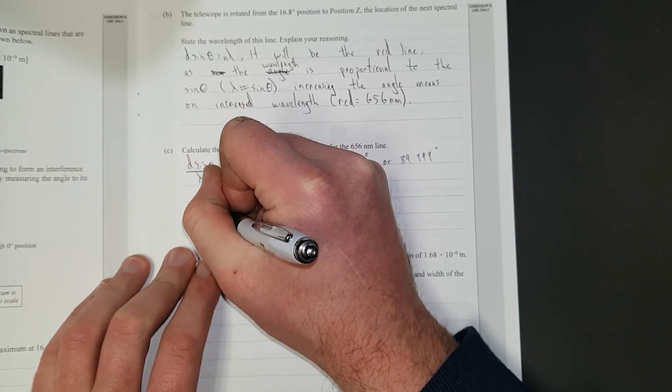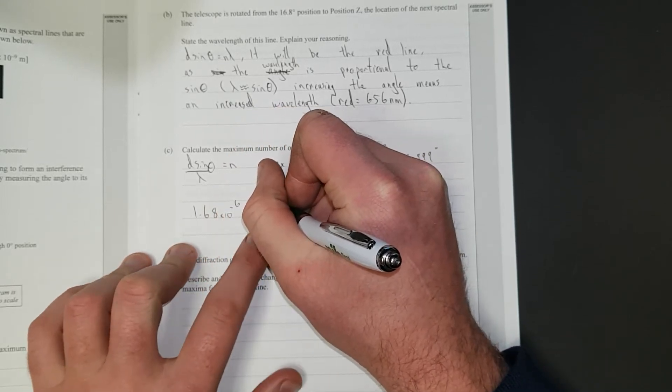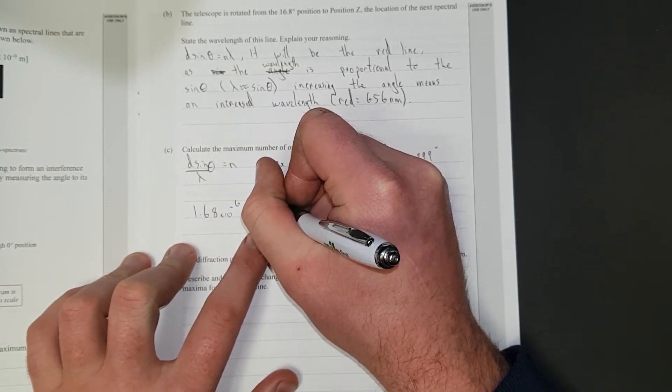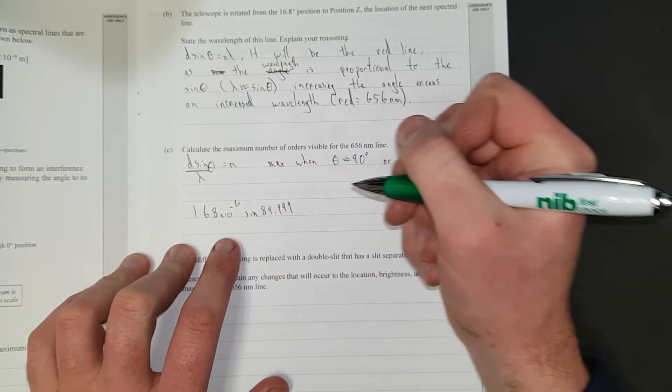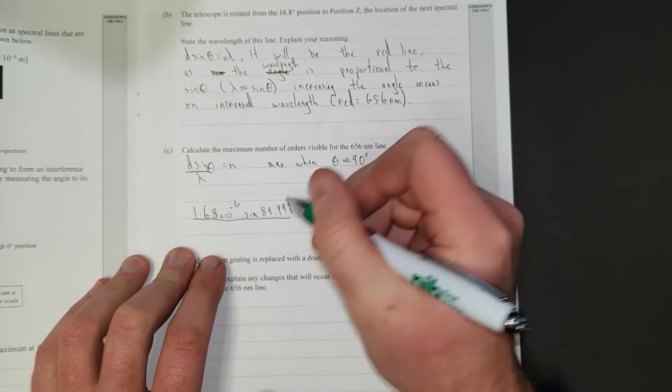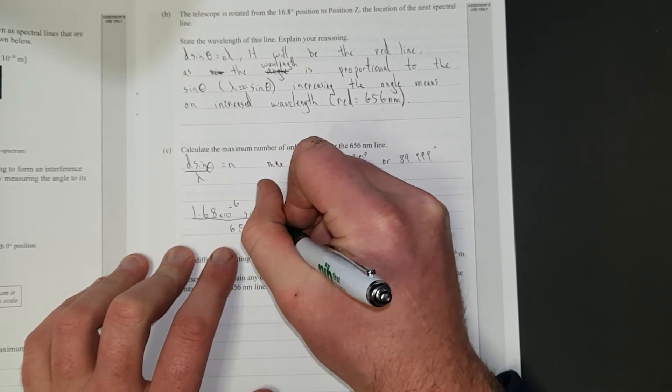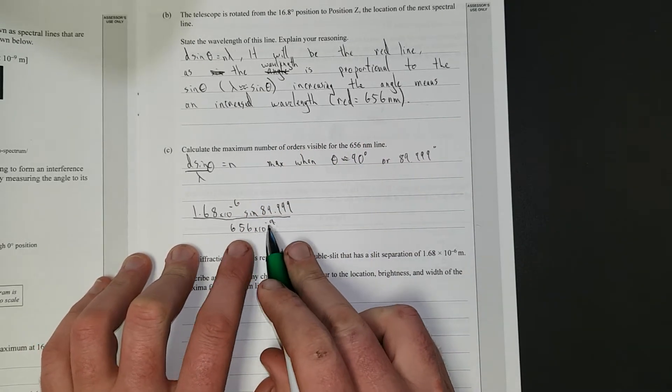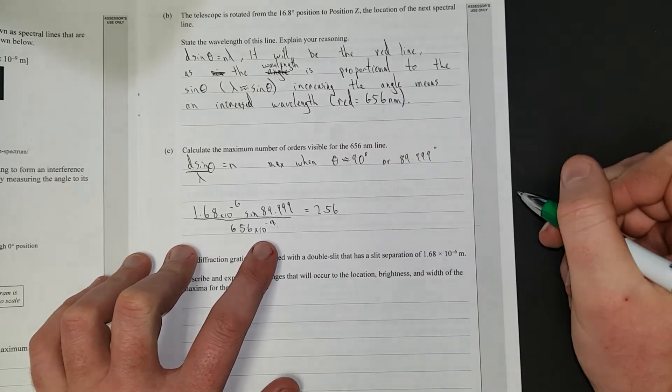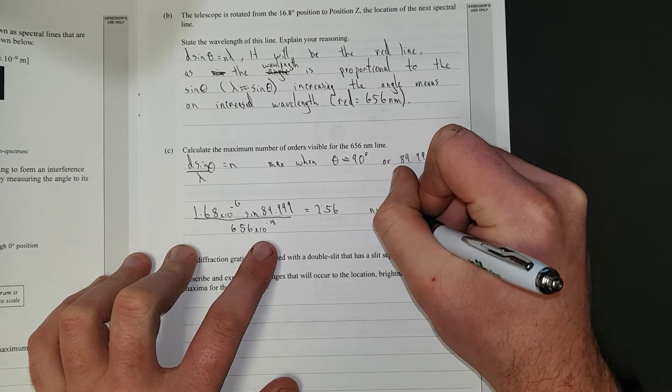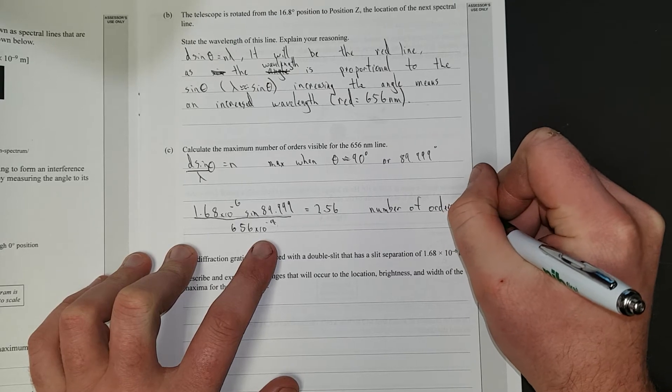1 point, because d is 1.68 times 10 to the negative 6 times sine 89.999. It should just go 90, but whatever, I'm being pedantic. Divided by 656 times 10 to the negative 9. Quite a few people missed out there. They just went divided by 656. I'm like, you idiot.